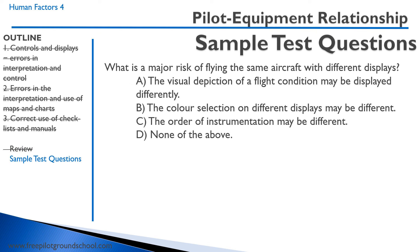What is a major risk of flying the same aircraft with different displays? A: the visual depiction of a flight condition may be displayed differently — yes, that is a very real possibility. B: the color selection on different displays may be different — no, generally it's the same; the earth is brown and the sky is blue. C: the order of instrumentation may be different — that's pretty rare, as most aircraft use the standard six-pack configuration. D: none of the above. The correct answer is A.